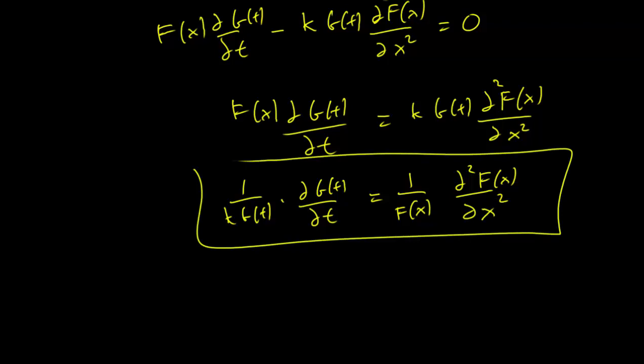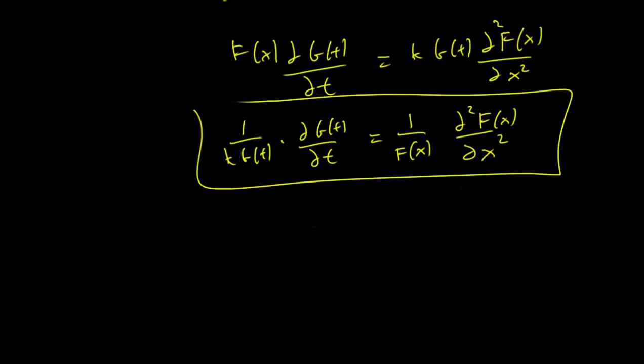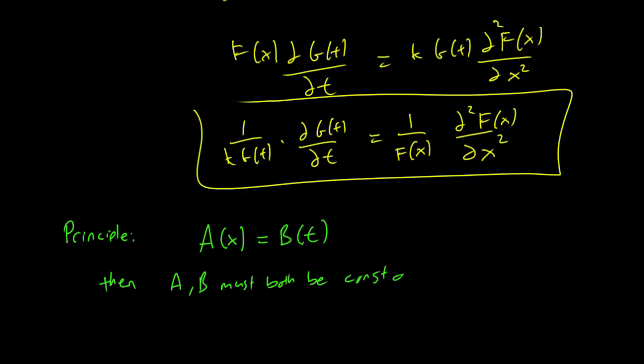Now you may ask why is it so important that the equation is written down this way. Here is an important principle for us. The principle says that if we have a function A that depends on x, it is equal to a function B that depends on time, then A and B must both be constant functions.